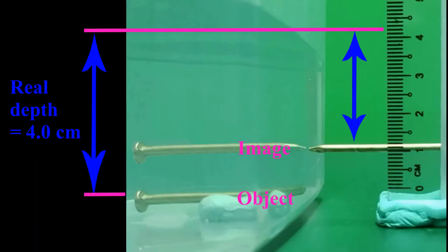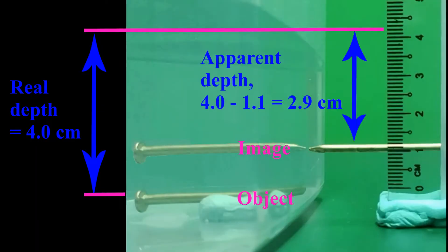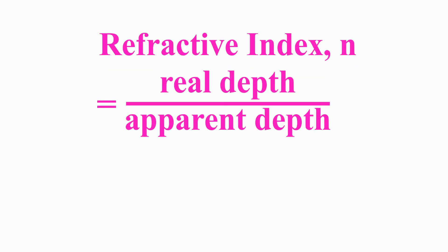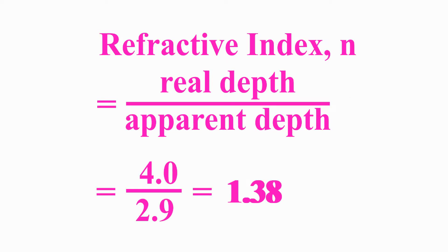Apparent depth is 4.0 minus 1.1, we get 2.9cm. Applying the refractive index formula, which is real depth divided by apparent depth, we got the refractive index of water as 1.38.